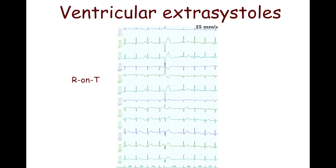R-on-T is a distinct subtype of ventricular extrasystoles associated with high-risk ventricular tachycardia development. The risk is particularly high in patients with long QT syndrome and in the acute phase of myocardial infarction. R-on-T ventricular extrasystole may trigger polymorphic ventricular tachycardia that may degenerate into ventricular fibrillation and lead to sudden cardiac death.